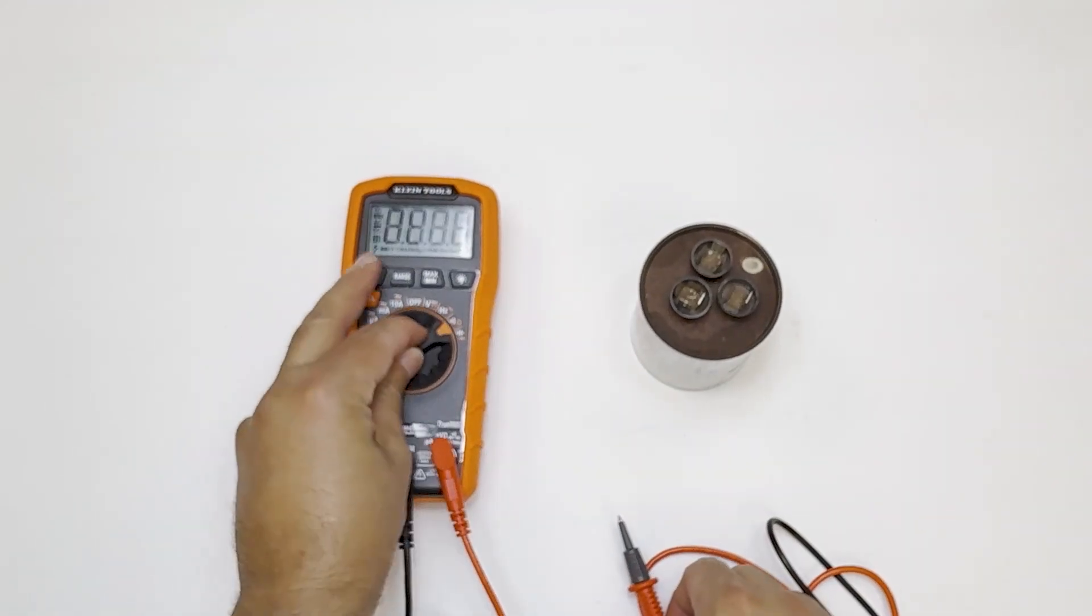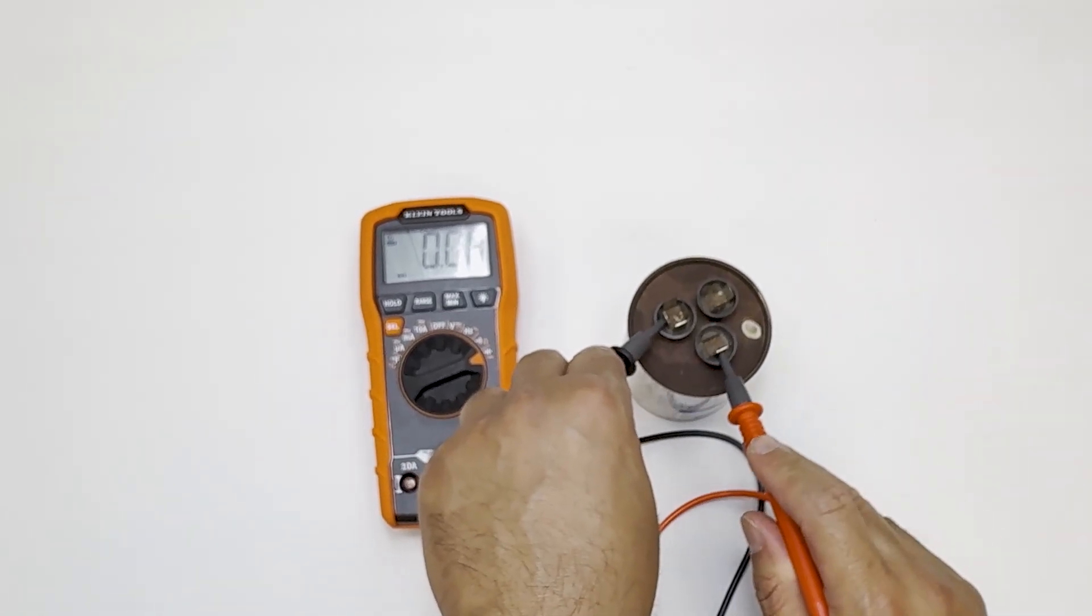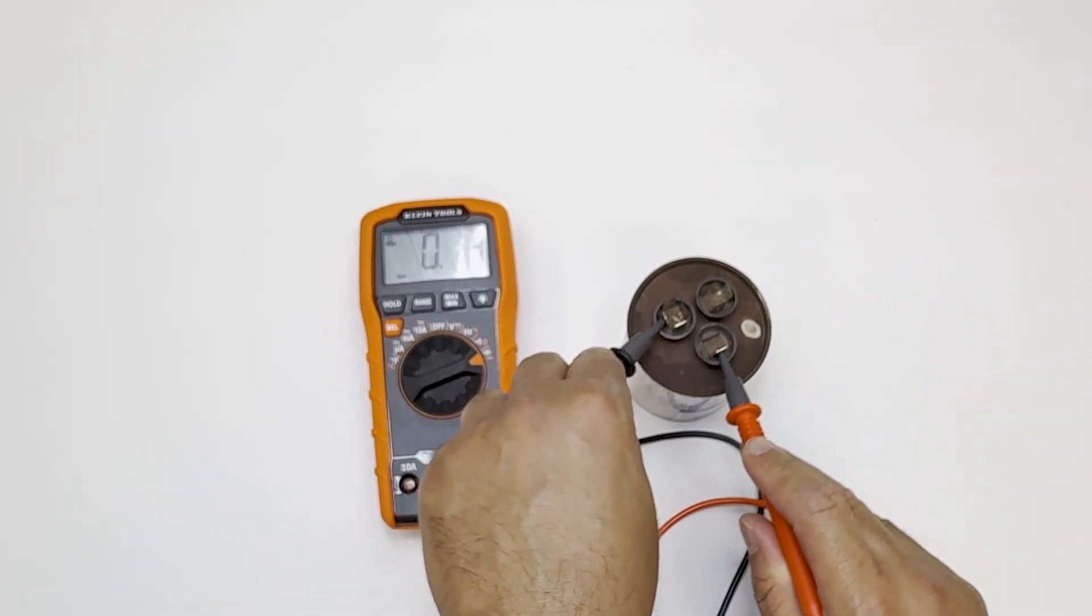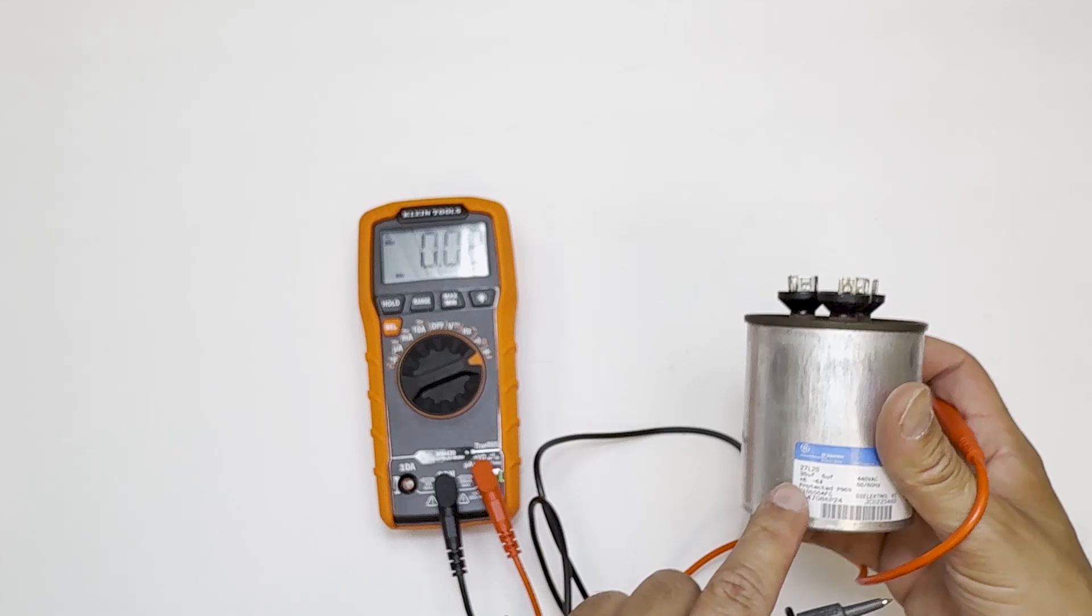So in testing the bad capacitor, C to fan shows 0 microfarads. It should be close to 5, but we're getting nothing, so it's totally bad. So we know for sure this capacitance is bad, even though the fan is supposed to show 5 microfarads.